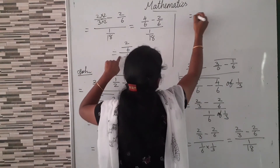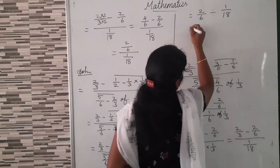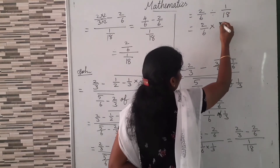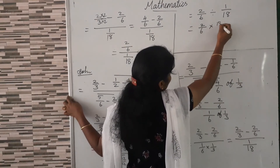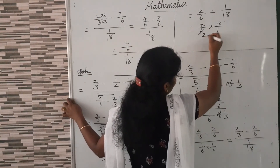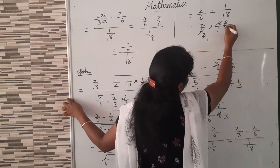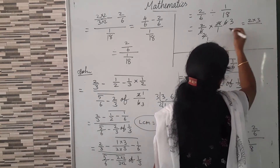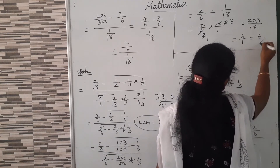Now we can write: 2/6 divided by 1/18 equals 2/6 multiplied by the reciprocal of 1/18, which is 18/1. Now 2/6 into 18/1. Using 3 tables: 2 threes are 6, 6 threes are 18. So 2 into 3 by 1 into 1 — numerator is 6, denominator is 1. So 6/1, which means the answer is 6.